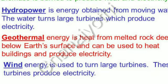Hydropower is energy obtained from moving water. The water turns large turbines which produce electricity. Geothermal energy is heat from melted rock deep below earth's surface and can be used to heat buildings and produce electricity. Wind energy is used to turn large turbines, which also produce electricity.